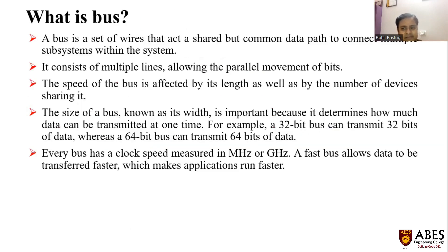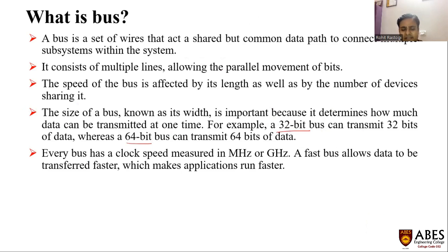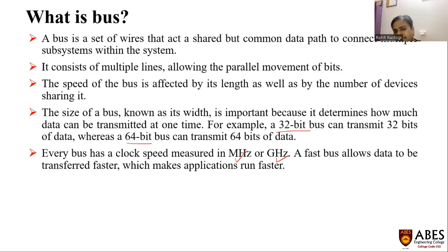Bus is actually a set of wires which is used to share data. As per the width of the data, the buses are of 32 bits or 64 bits. Every bus has a clock speed measured in megahertz or gigahertz. If the bus has 4 megahertz speed, it means 4 × 10^6 bits are being transferred at a time.